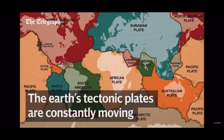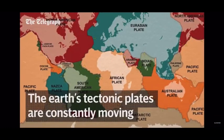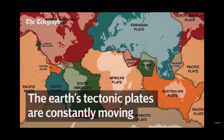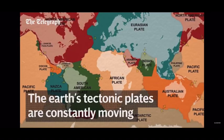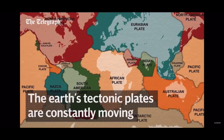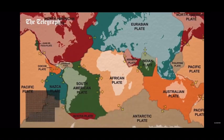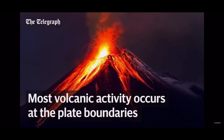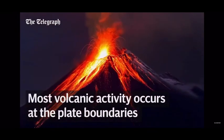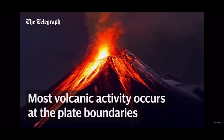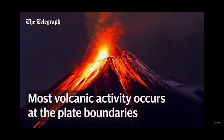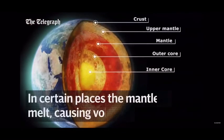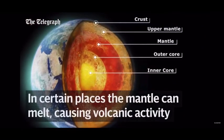The surface of the earth, the crust, is comprised of a number of tectonic plates which are constantly moving slowly — at about the rate your fingernails grow. Most volcanic activity occurs at the places where these plates meet: the plate boundaries.